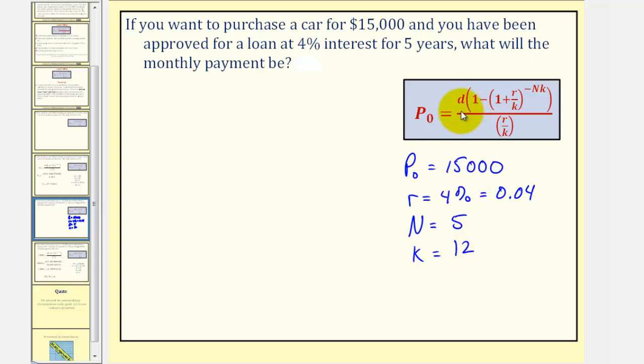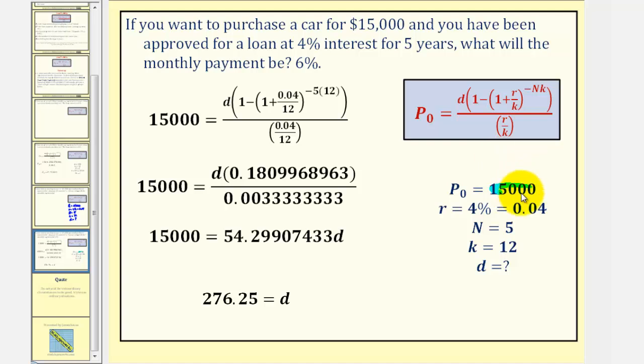So our goal here is to find the monthly payment amount, which would be D. So now we'll substitute these values into our formula, and this time we'll be solving for D. So P₀ equals 15,000. R equals 0.04. N equals five. K equals 12. K is here, here, and here.